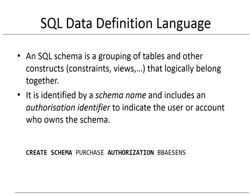Let's start by discussing SQL as a data definition language. A key concept to start off with is the SQL scheme — a grouping of tables and other database objects such as views, constraints, and indexes, which logically belong together. An SQL scheme is defined by a scheme name and includes an authorization identifier to indicate the user or account of users who own the scheme. A scheme is typically defined for a particular business process or context such as a purchase order or HR system. Here you can see the SQL definition of a scheme called 'purchase', whereby 'bbossens' is assigned as the owner.